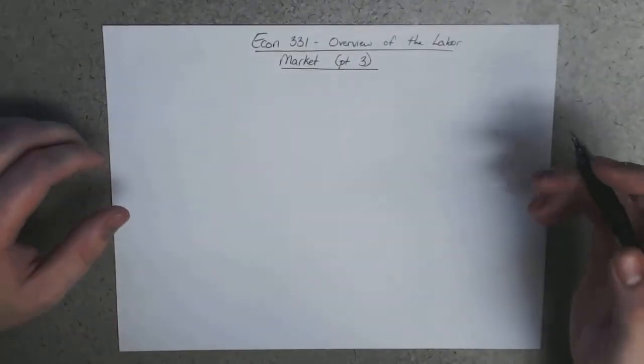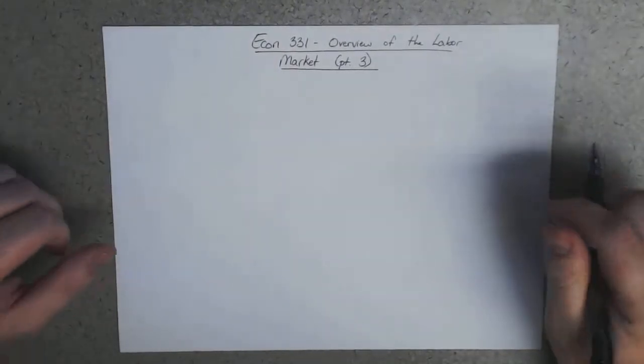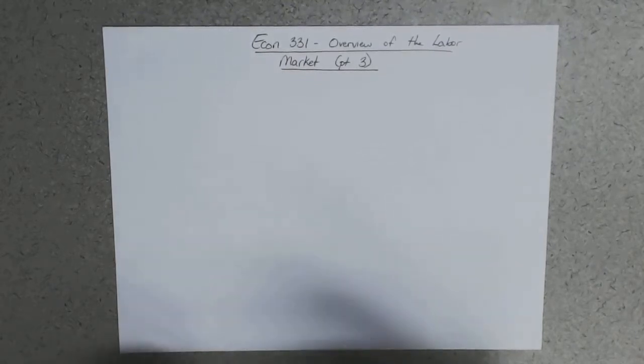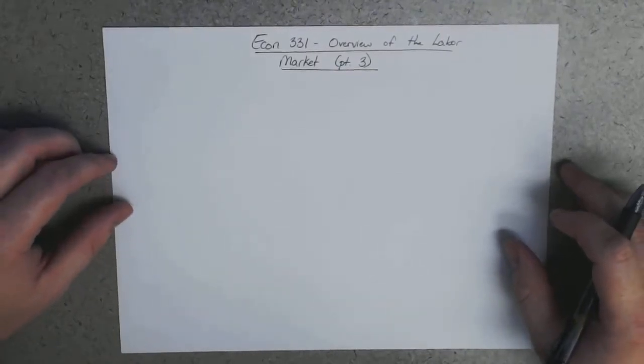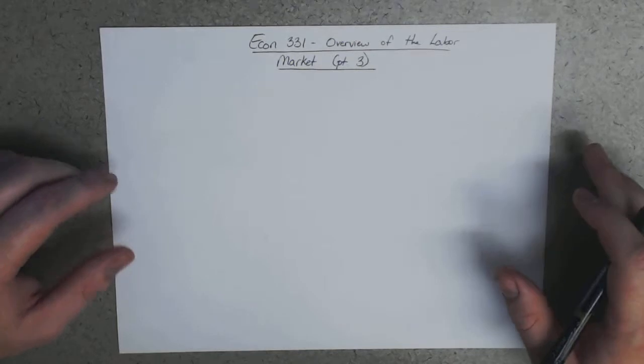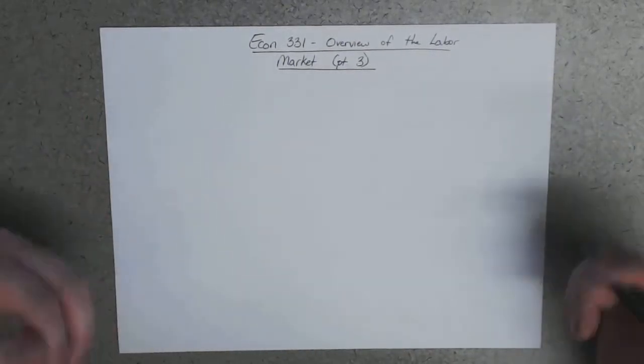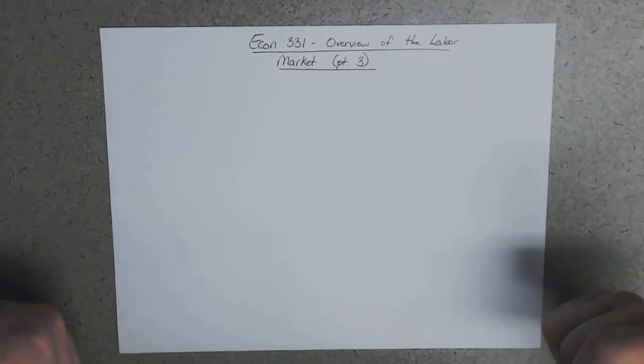It would be simple to say that workers earn a wage and then we just leave it at that. Unfortunately, this simple statement conceals way too many underlying factors that are extremely relevant. One general statement that we can make is that the actions of buyers of labor and sellers of labor, and the interactions of these people, is going to set prices for all kinds of labor services. In the broader sense, these prices provide information to the market as to the relative scarcities and wants of societies.